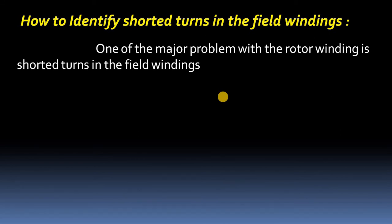Shorted turns exist in the rotor winding because of aging of the machine, thermal stresses, or on-off cycles — meaning we give supply to the rotor winding when we need the generator voltage and turn off the DC supply when we don't. Because of these on-off cycles, shorted turns will exist in the field poles.